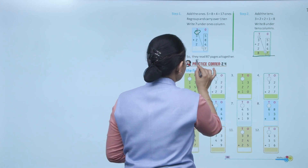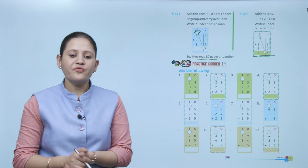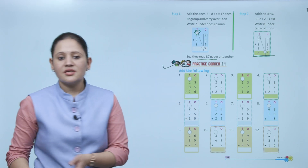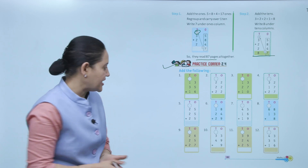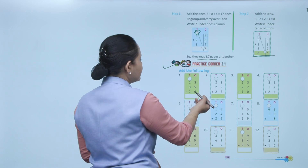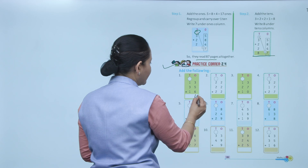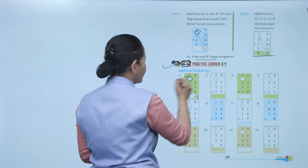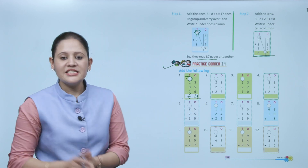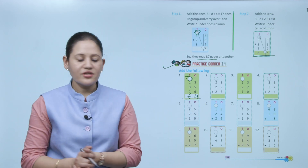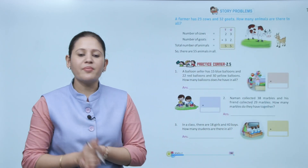Practice corner 2.4 — add the following three numbers: 13, 35, and 16. Start from ones — 6 plus 5 plus 3 is 14, write 4 and carry 1. Tens: 1 plus 3 plus 1 plus 1 carry is 6. Total is 64. You have to practice all the questions.